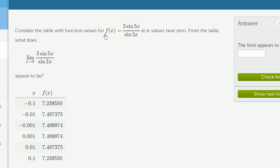Consider the table with function values for f(x) = (3 sin 5x)/(sin 2x) at x values near zero. From the table, what does the limit as x approaches zero of (3 sin 5x)/(sin 2x) appear to be?